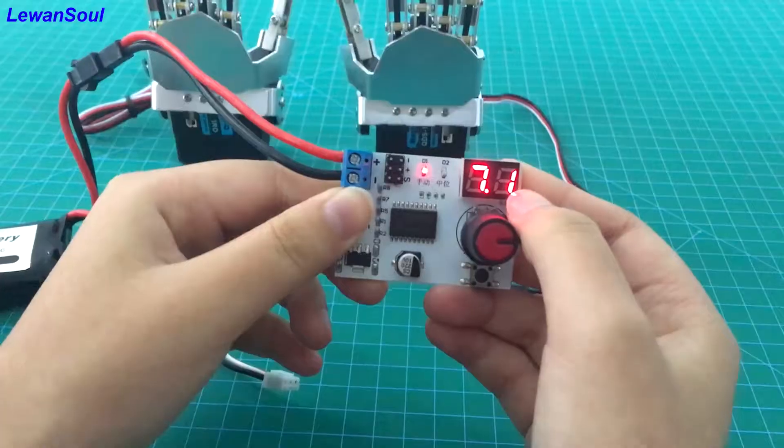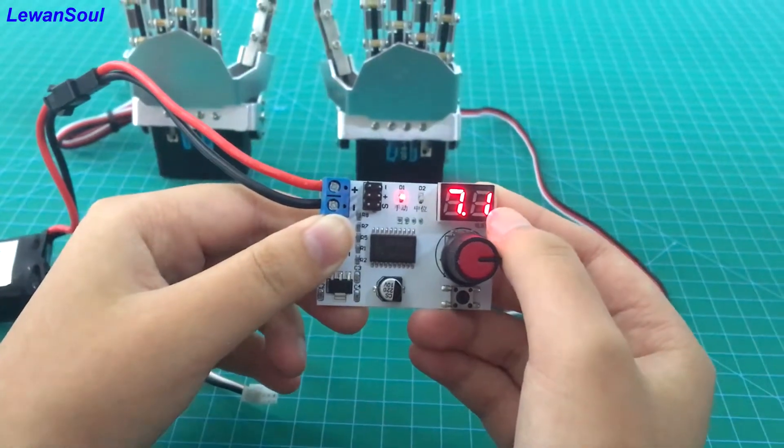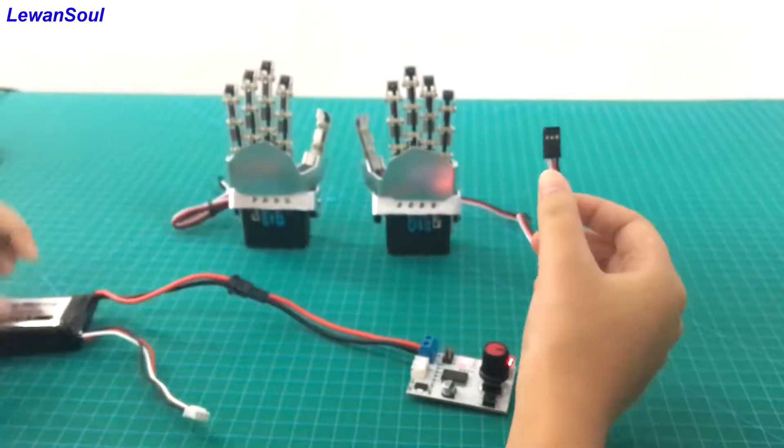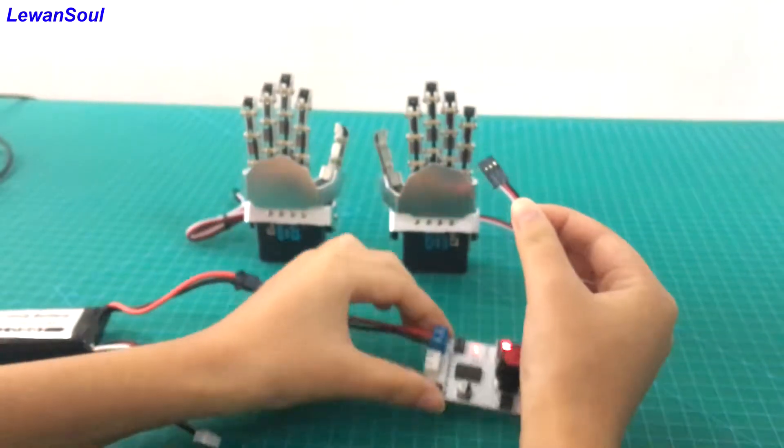And as you can see, the number of the display screen represents the voltage of our battery. So we can connect the right hand to the servo controller.